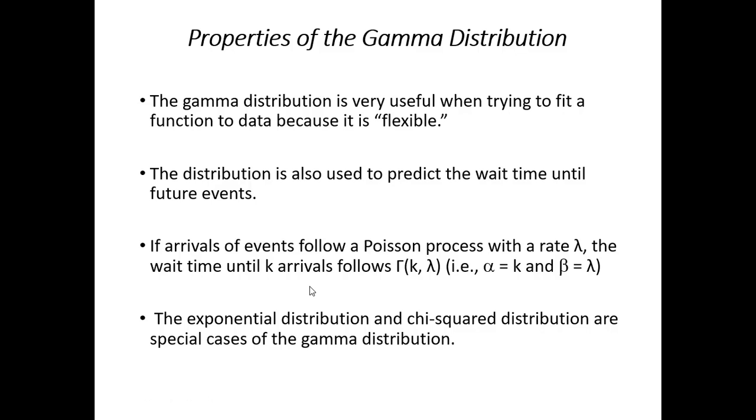So, the gamma distribution could be very useful if you're trying to fit a function to data. Because it's flexible in the sense with alpha and beta varying, you get these different shapes. So, that makes it really good when you're trying to do this sort of thing.